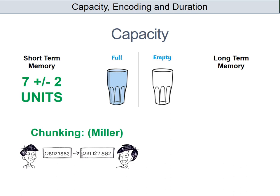If we look at this example, the number 081127882 has nine digits in it. The person on the left is looking a bit unhappy — nine digits is a lot to remember if you think each of those are separate units of information. Some people will be able to remember it; it's on the upper edge of short-term memory capacity, but many people would struggle.